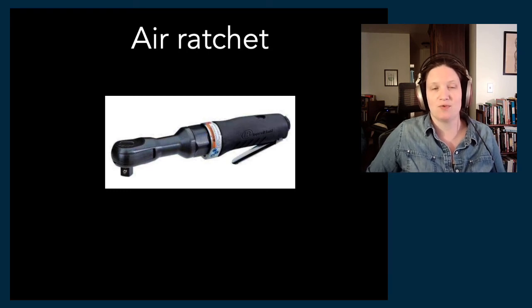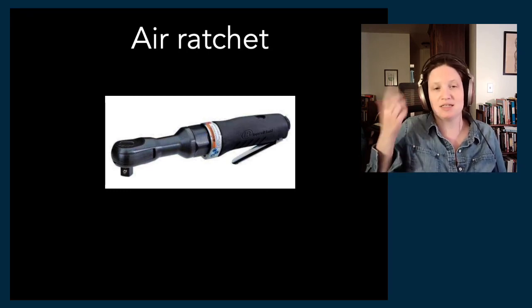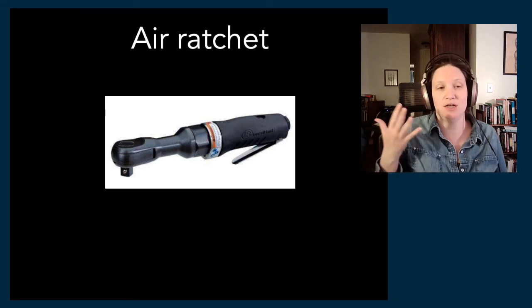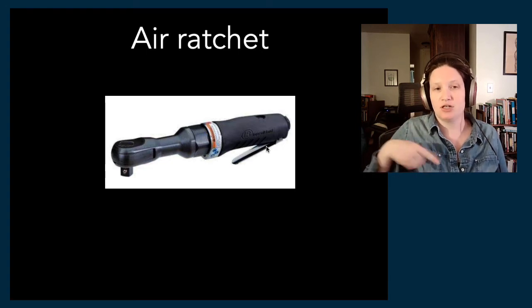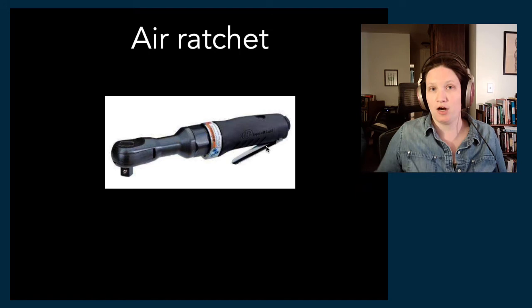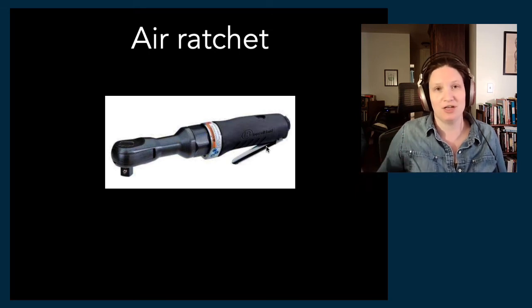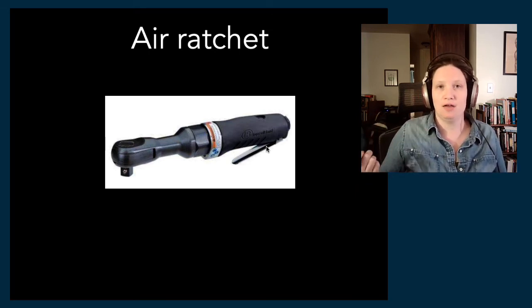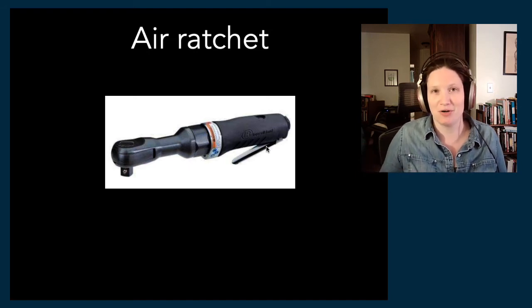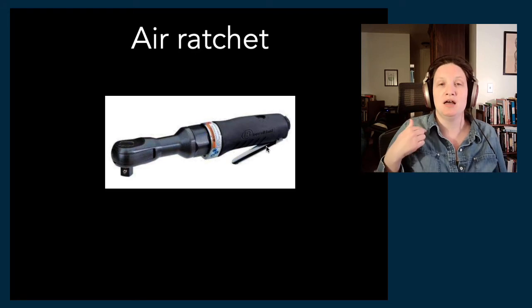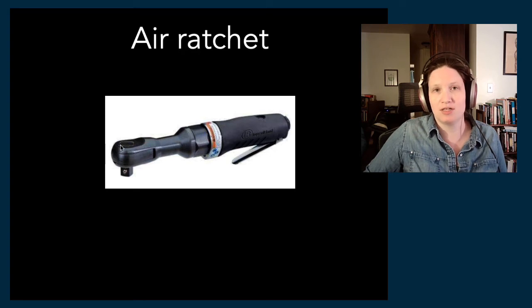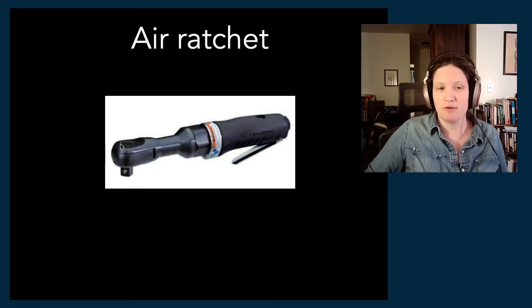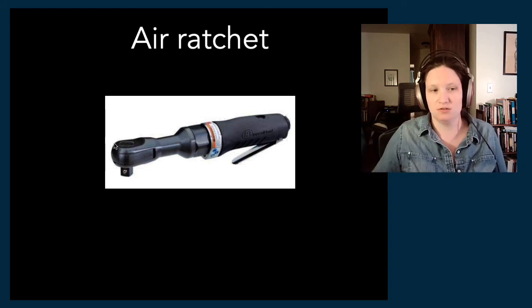There's also an air ratchet — a ratcheting wrench tool controlled with a trigger so it will ratchet and ratchet and tighten a bolt using air. That's the sound you'll hear when mechanics are putting parts of your engine together or taking them apart. It has the same switch on the top that changes direction: in one setting it'll tighten bolts, and when you flip it to the other direction it'll loosen them.